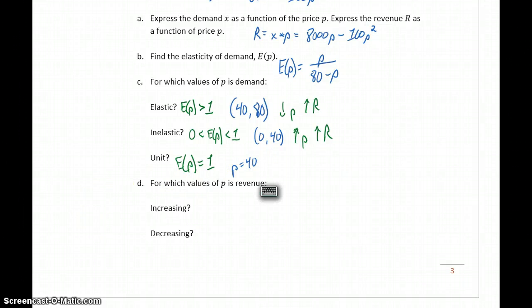So now what we want to address is for what values of p is our revenue increasing and for what values is it decreasing. Revenue is increasing whenever demand is inelastic, because we have a situation where that increase in price yields a smaller decrease in demand. So revenue is increasing on the interval from 0 to 40 and decreasing on the interval from 40 to 80, because when demand is elastic, increasing the price actually decreases our revenue because we see that larger decrease in demand.